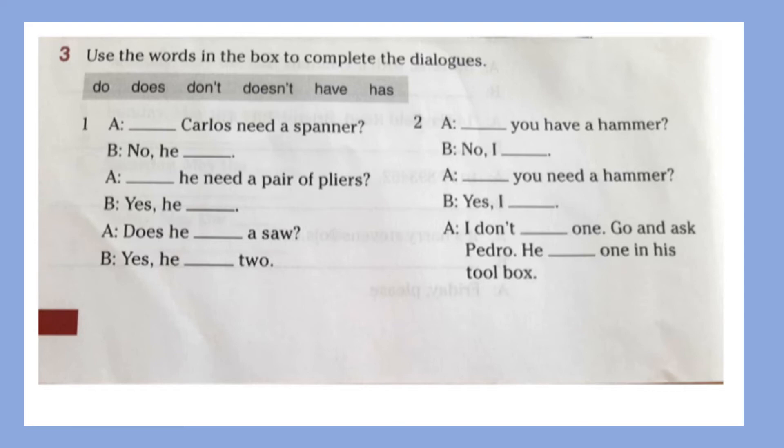Let's read dialogue number one first. It's between A and B. A: space Carlos need a spanner. B: No, he space. A: Again, space he need a pair of pliers. B: Yes, he. Next, A: Does he space a saw. B: Yes, he two.